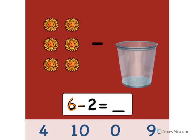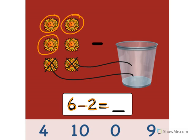6 minus 2 equals what? Let's take away 2. 1, 2. Put the two suns in the trash can. What does that leave us with? Let's count. 1, 2, 3, 4. Point to the number 4. Nice. 6 minus 2 equals 4. Well done.